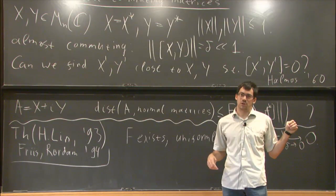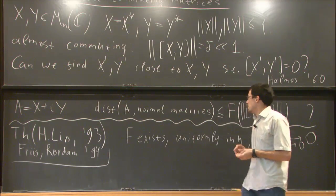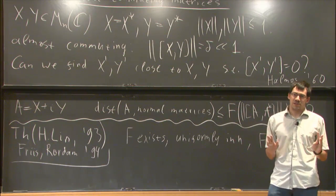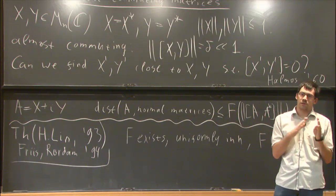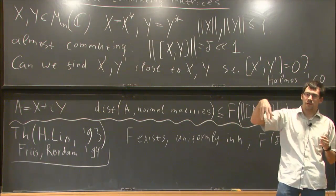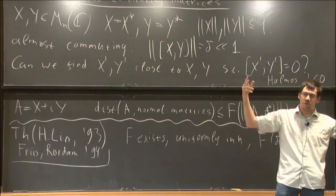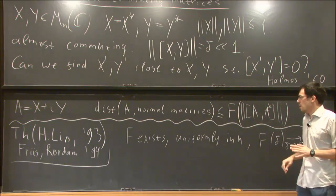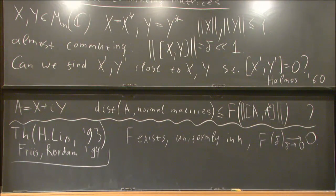It only requires elementary knowledge of C* algebras. You need to be able to approximate elements of real rank zero C* algebras by elements with finite spectrum. I mentioned this algebra of sequences of matrices, you consider the ideal of matrices that go to zero, look at the projection to the quotient algebra, and you need to kind of invert this projection.